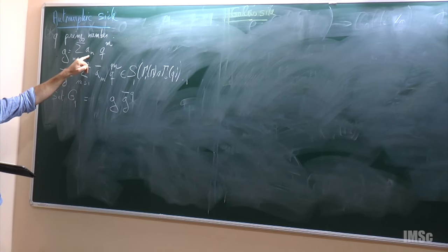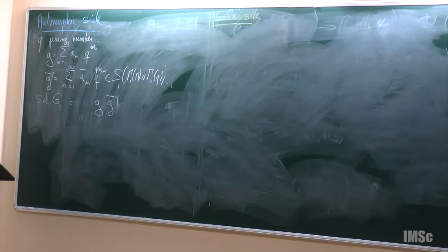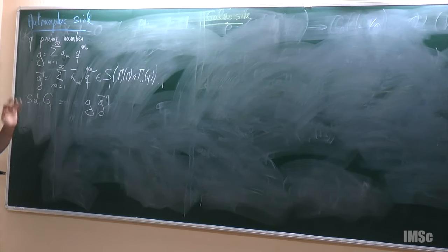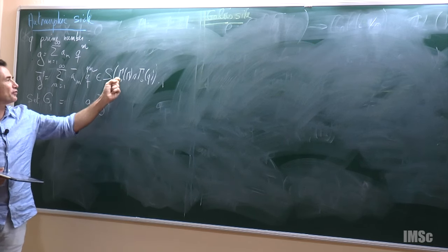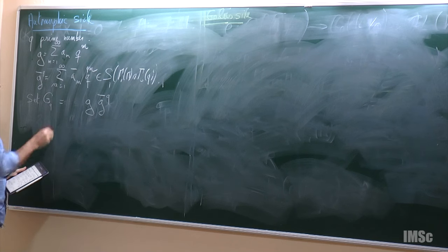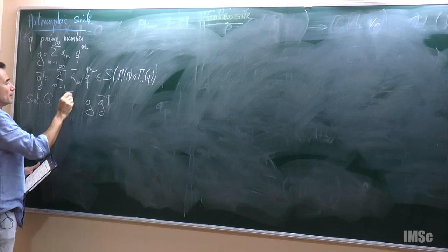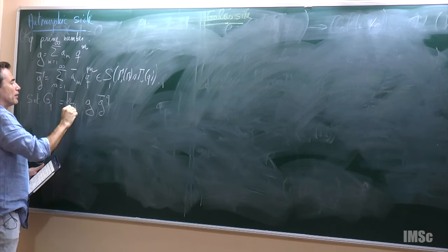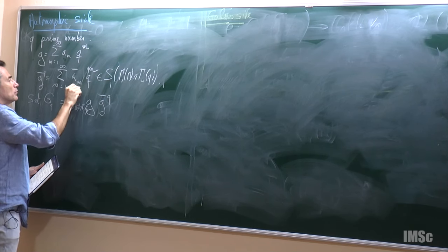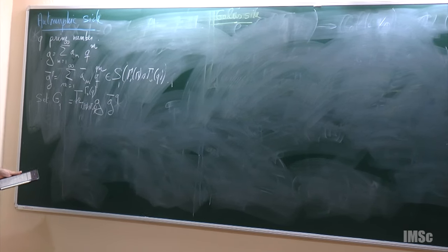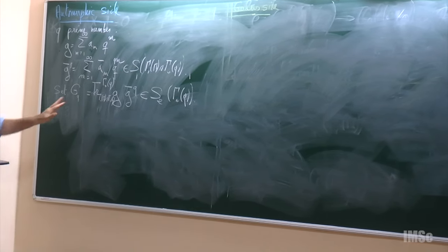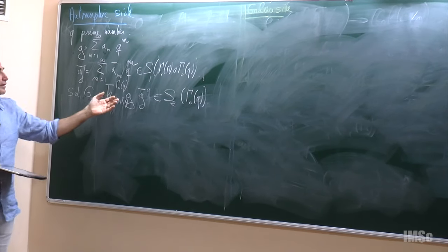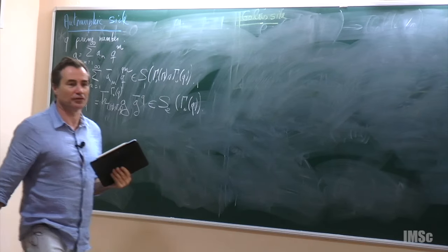You take the product of the two and get a modular form of weight 2 for the intersection of those two groups. Then you take the trace from that group to Γ₀(Q), getting a modular form of weight 2 for Γ₀(Q). This capital G_Q is not a newform — by taking products you destroy the structure.